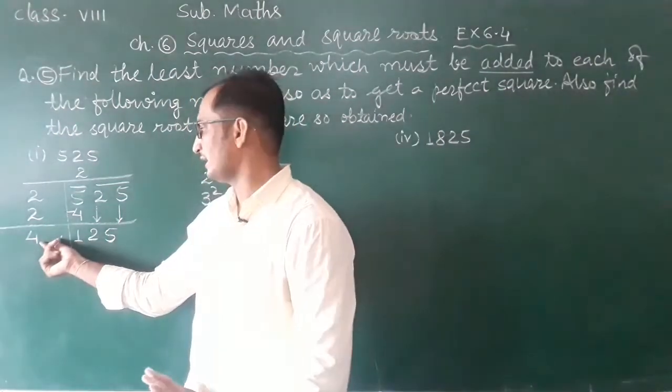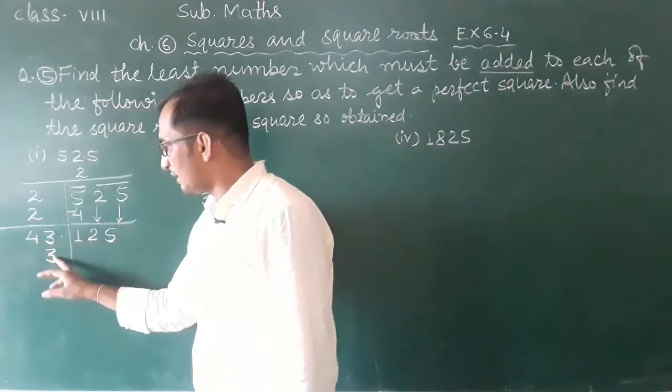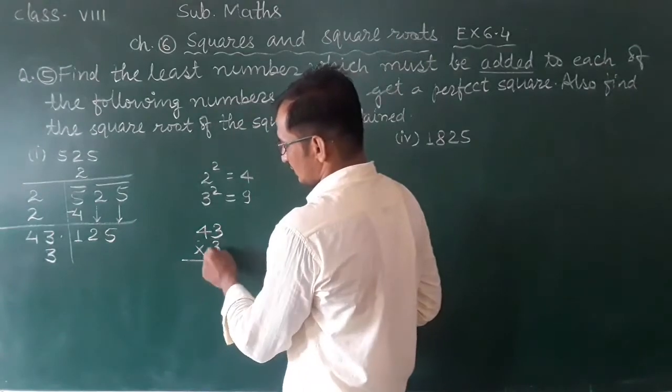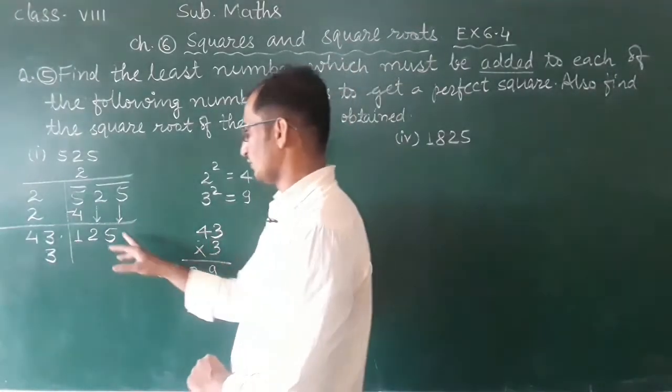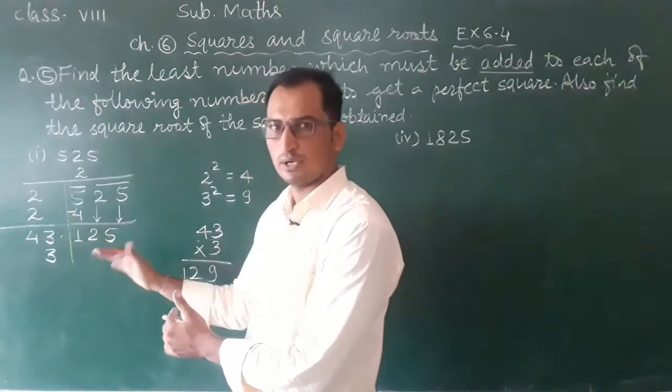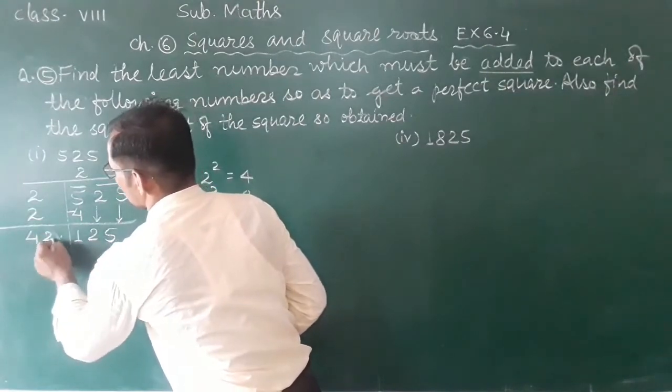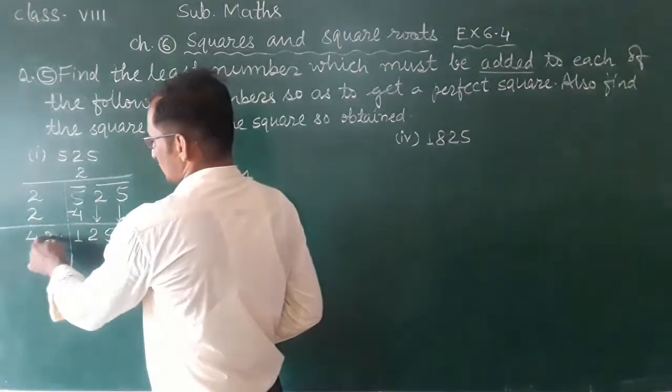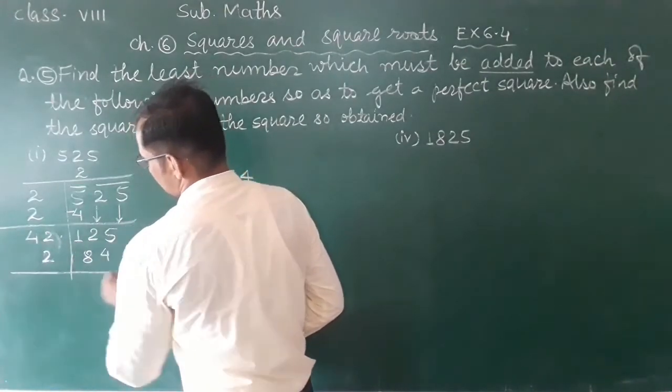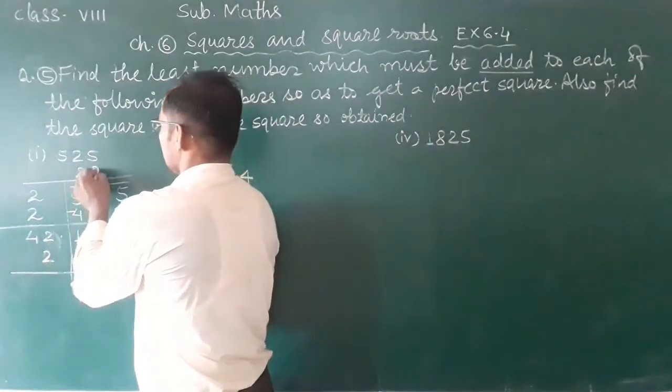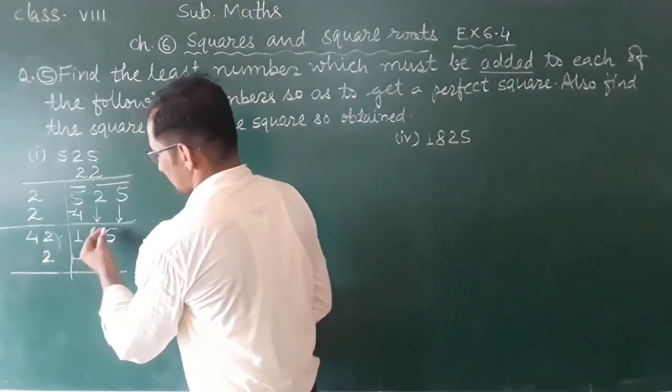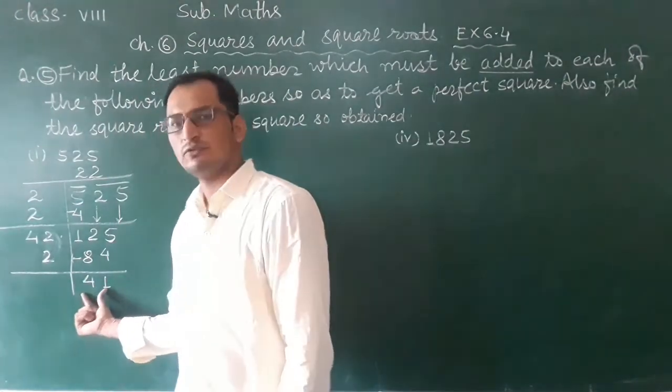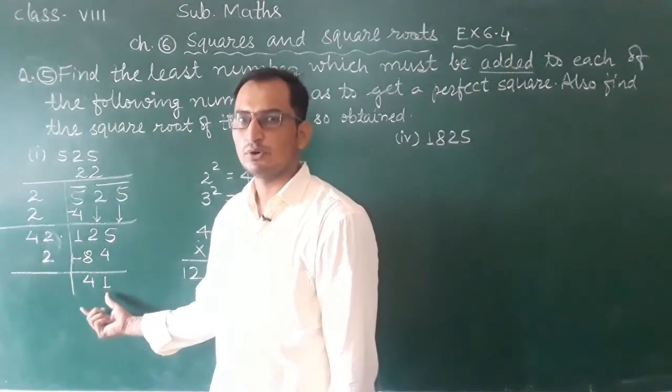43 into 3: 3 times 3 is 9 and 12, making 129. This is more than 125, so we will put 2 here and 2 here instead. 42 times 2 is 84. We subtract 84 from 125, which gives remainder 41.